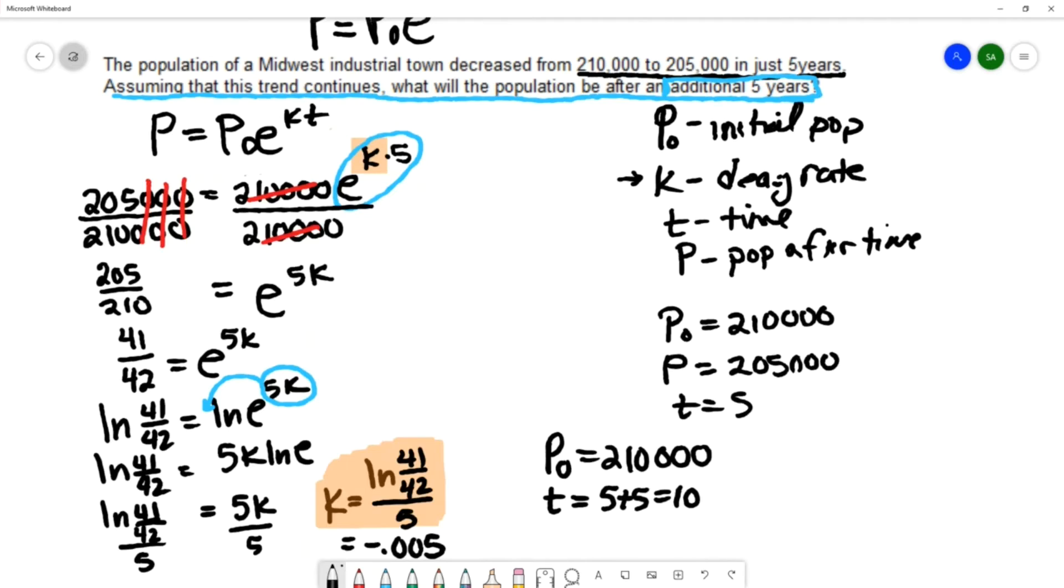Or we could choose to use P₀ as 205,000. And in that case, we would only need to use the additional five years to do the calculation.